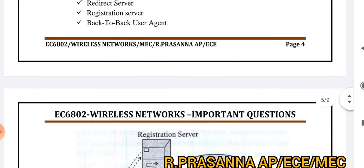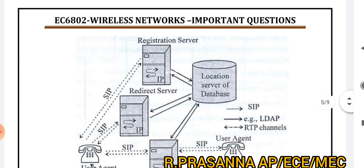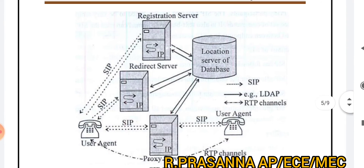SIP entities involve terms and terminologies. These include: User Agent, Registration Server, Proxy Server, and Location Server Database. You have to explain all these entities — for each, just explain two or three lines.